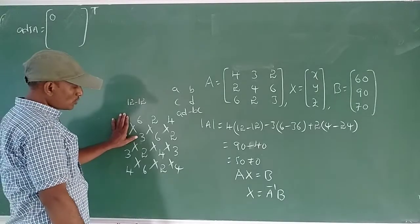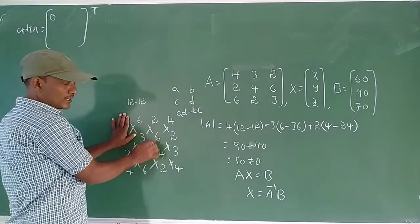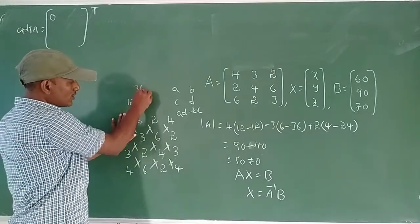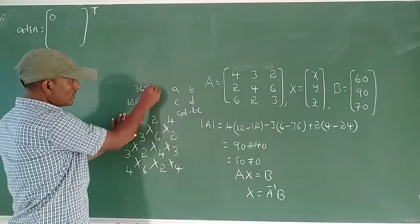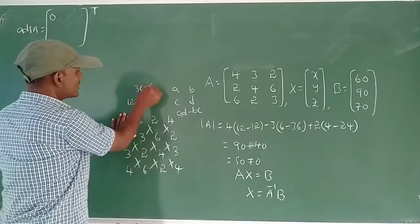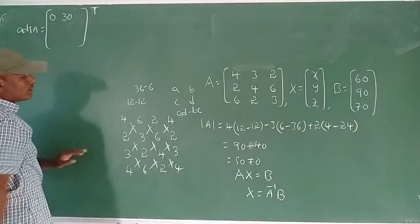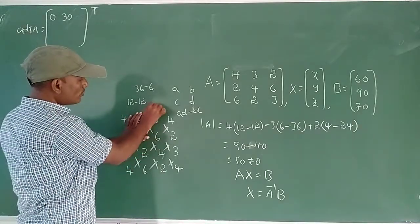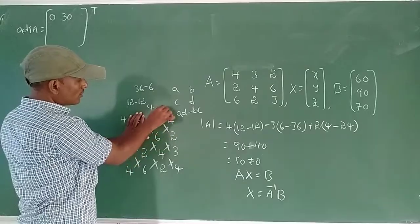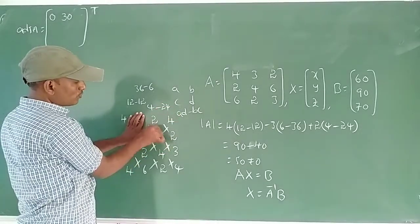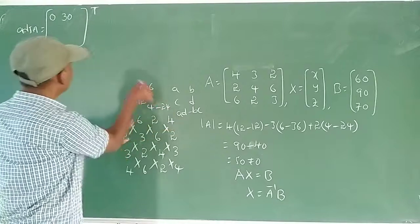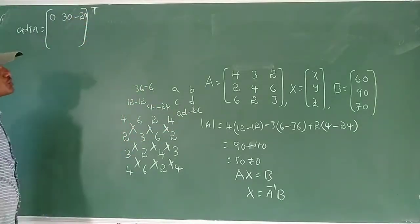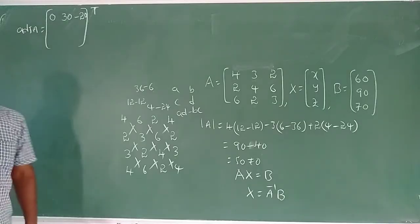Cofactor of element (1,1): minor is [4,6; 2,3], value = 4×3 − 6×2 = 12 − 12 = 0. Cofactor of element (1,2): minor is [2,6; 6,3], value = 2×3 − 6×6 = 6 − 36 = −30, with minus sign = 30... wait, sign gives −(6−36) = 30. Cofactor of element (1,3): minor is [2,4; 6,2], value = 2×2 − 4×6 = 4 − 24 = −20.